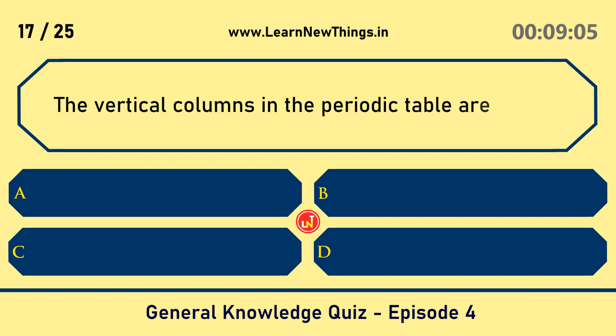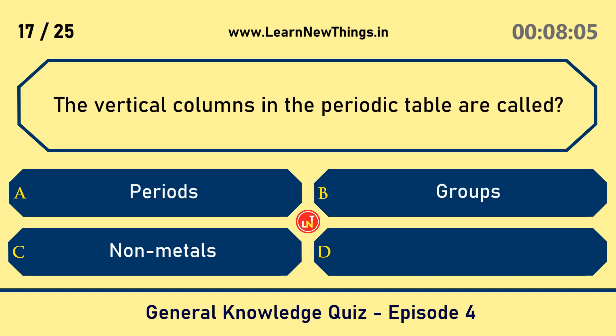The vertical columns in the periodic table are called? Groups.